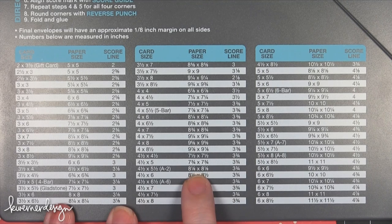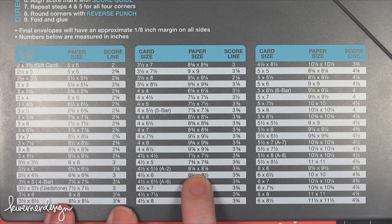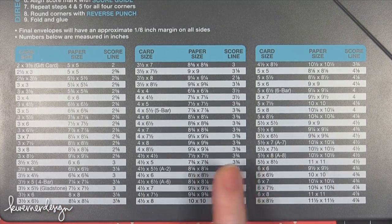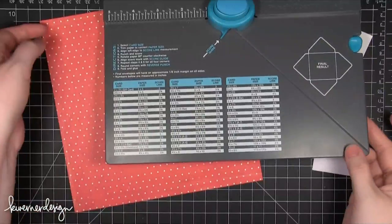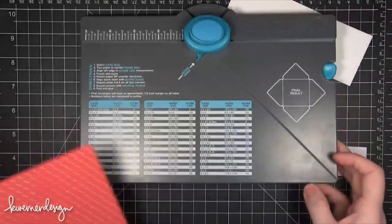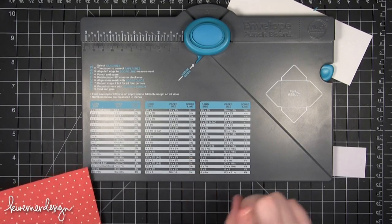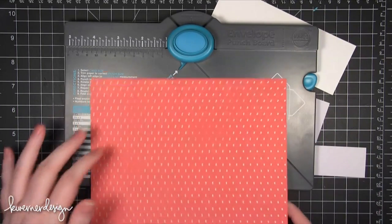For that size of card I would cut out some patterned paper that is eight and one eighth inch by eight and one eighth inch and then I would score at three and three quarters. So I've cut my patterned paper to the size it needs to be and we're only going to use this scoring measurement of three and three quarters once, and it's just the very first time you put it in the board.